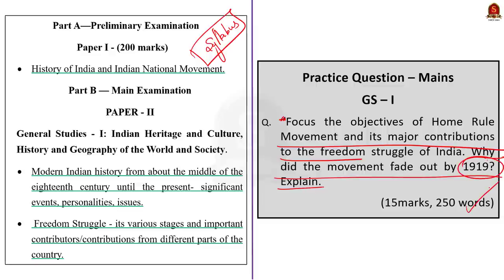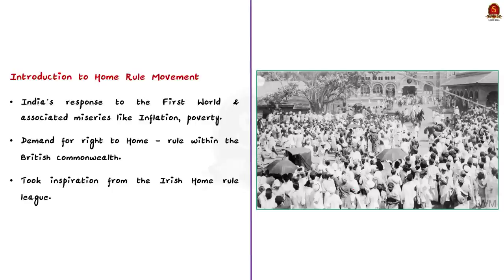Whenever the keyword 'explain' is given in a question, you are expected to give a clear account as to how or why something happened. As a candidate, you are expected to be clear with relevant facts and implications. In the introduction, you can write about the basics of the Home Rule Movement and mention a brief history of the movement.